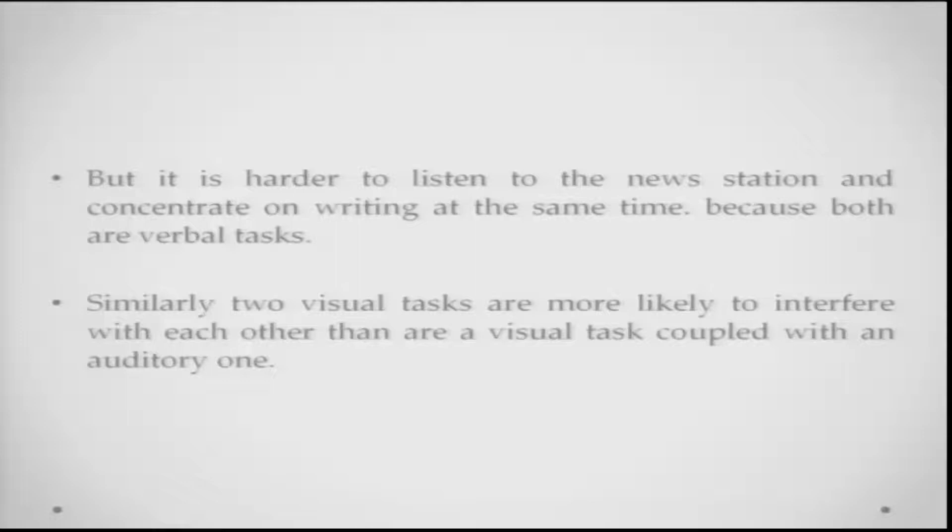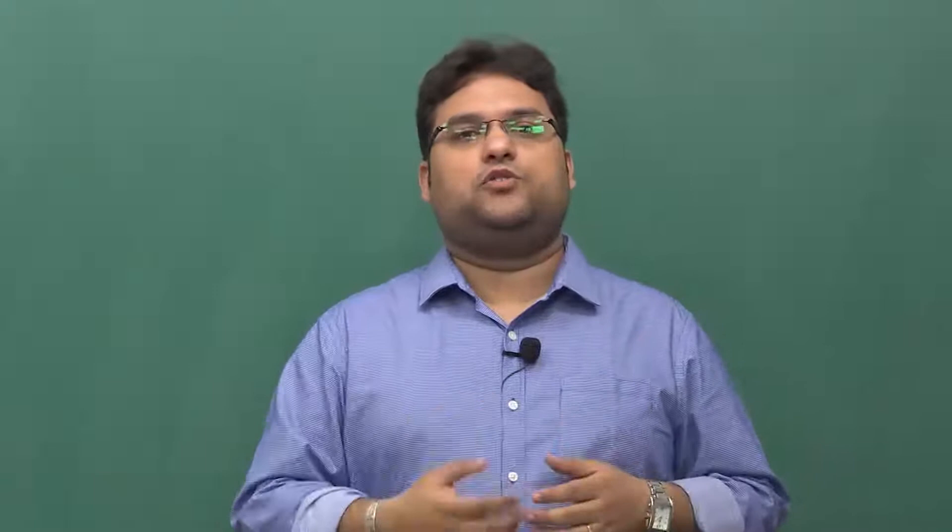Similarly, if you give somebody two visual tasks, they are also more likely to interfere with each other than a visual task compared with an auditory task or an auditory task compared with a haptic task. Within a modality, there is a capacity limitation — put too many tasks in and you will see the PRP finding of characteristic slowing down and extra errors starting to come in.